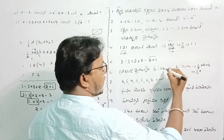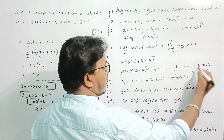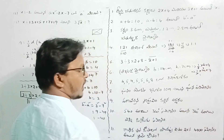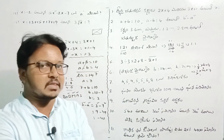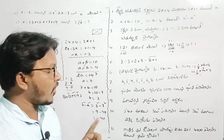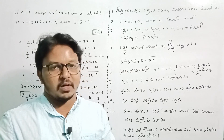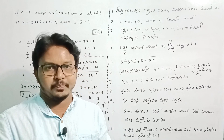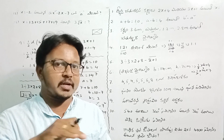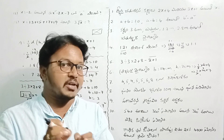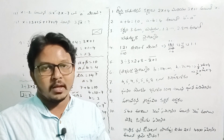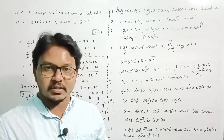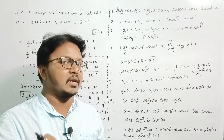The area of triangle formula is half of b into h. What is b? 14. What is h? 7. So 2 ones are 2, 2 sevens are 14, 7 into 7, 7 sevens are 49. When you choose units, 49 cm squared. So the area is 49 cm².